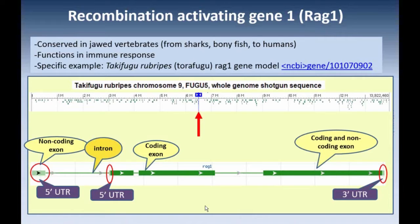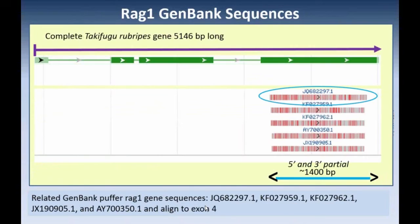The second and fourth exons are both coding and non-coding. I once had a submitter who thought that exons were only coding, but it really depends on your organism and on the gene. In the puffer fish, of the four exons for this gene, only one exon is exclusively coding.